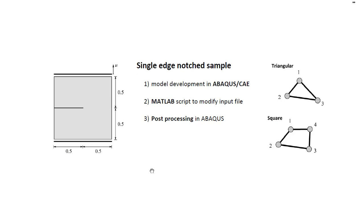In this short Abacus tutorial, we are going to walk through the process of creating a finite element analysis for a single notch plate. We are going to do this in a couple of stages. First, we will focus on model development in the graphical user interface. Then we will use a MATLAB script to change the file. Finally, after running the new script, we will discuss the results. In this tutorial, we are going to use both triangular and square elements.